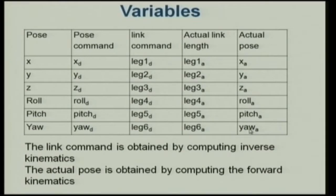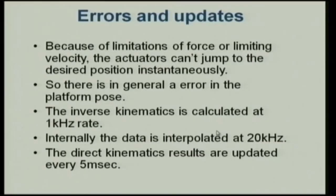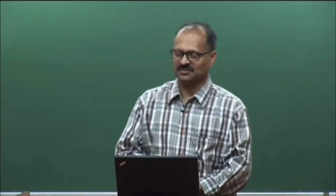This is important to understand: if you take a random snapshot of the manipulator during its run, it is not at the desired position. It will eventually get there, or within a small error bound, but at that instant it may not be at the desired position. The actual leg lengths differ from desired, and the actual pose is something else. This is also true of serial manipulators.